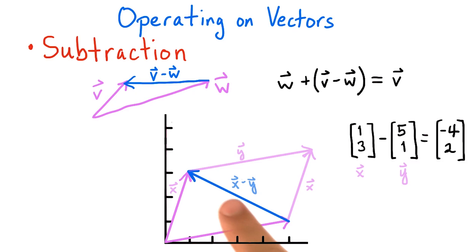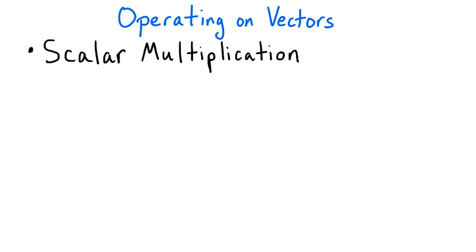If we reverse the direction of this arrow, we'll obtain y minus x. Another important operation on vectors is scalar multiplication. In this case, a vector is multiplied by a number, which we call a scalar.